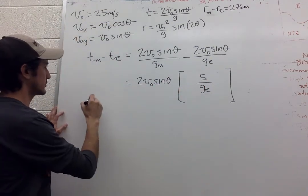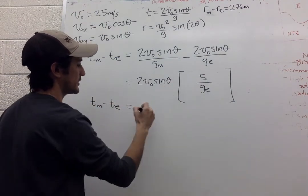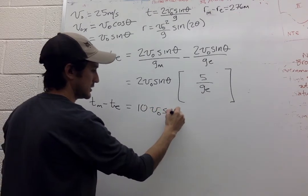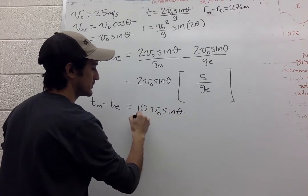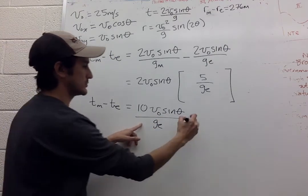Over g_E. So we can take the five out. So it's ten V_0 sine theta over g_E.